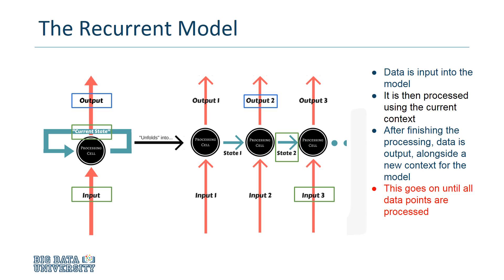Keep in mind that since the context changes at every step, the net can produce a different output for the same input depending on the current state. This is what allows a recurrent net to perform sequential data processing.